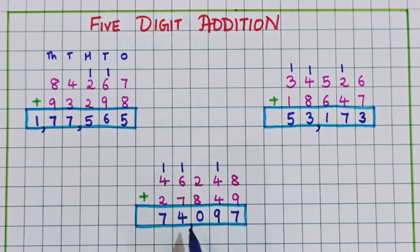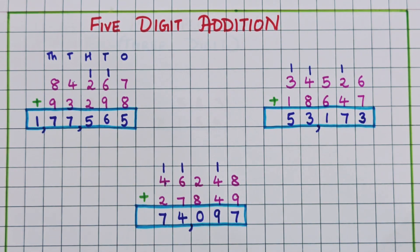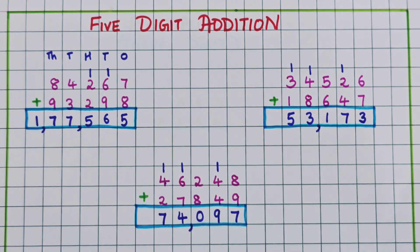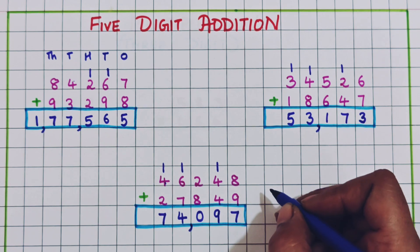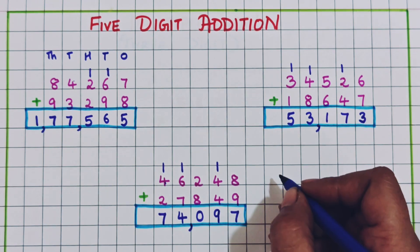Placing the comma, the answer is 74,097. I hope five-digit addition is clear to you.